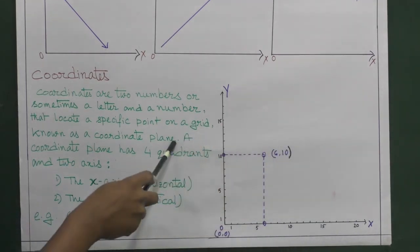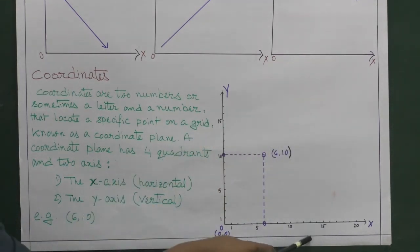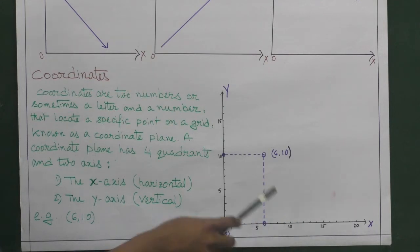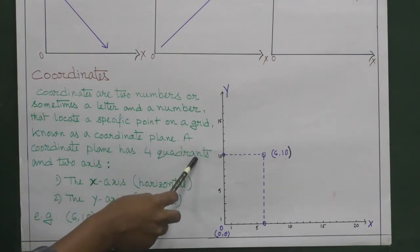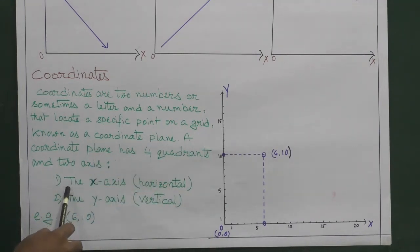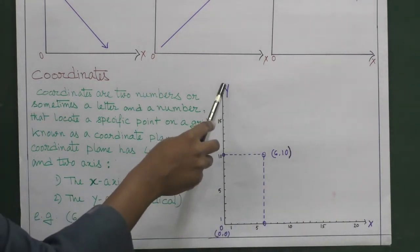This is the first quadrant, second quadrant, third and fourth quadrants. That's why here it's written that our coordinate plane has four quadrants and two axes: the x-axis which is horizontal and the y-axis which is vertical.